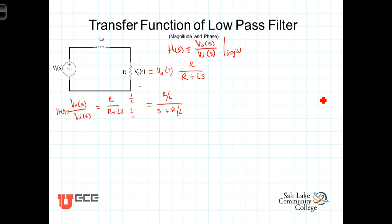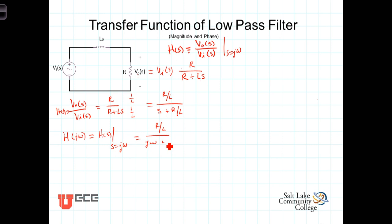Now we can determine the frequency response — a function describing the operation of this circuit as a function of frequency — again by replacing S with J omega. That will give us the sinusoidal steady state frequency response of this circuit. We're going to refer to it as the frequency response, call it H of J omega, which is simply equal to H of S evaluated at S equals J omega. In this case that gives us R over L divided by J omega plus R over L. We realize that this is a complex function — it has real and imaginary terms — and we can write it in terms of its magnitude and phase.